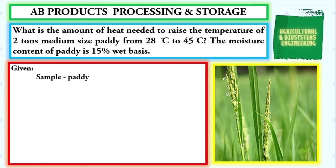Now, we begin solving the problem by identifying the given. We have our sample, which is the paddy. The weight of the sample is 2 tons. The initial temperature of the sample is 28 degrees Celsius.